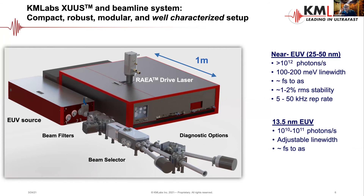The result is that you can get about 10¹² photons per second in a single harmonic in the near EUV, at 25 to 50 nanometer wavelength. At 13.5 nanometers — the wavelength of interest for EUV lithography — you get 10¹⁰ to 10¹¹ photons per second in a single harmonic order.